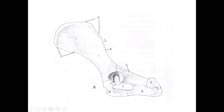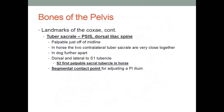Here's a canine ilium. You can see the cranial expansion — the crest of the ilium — and how it resembles a shield. The Greeks were actually describing the human ilium, but there are similarities with the dog. Landmarks on the ilium we need to look at include the tuber sacrali. In human and chiropractic terminology, the tuber sacrali is called the posterior superior iliac spine, or PSIS. These are synonymous terms. It's also called the dorsal iliac spine in animals. It is palpable just off midline.